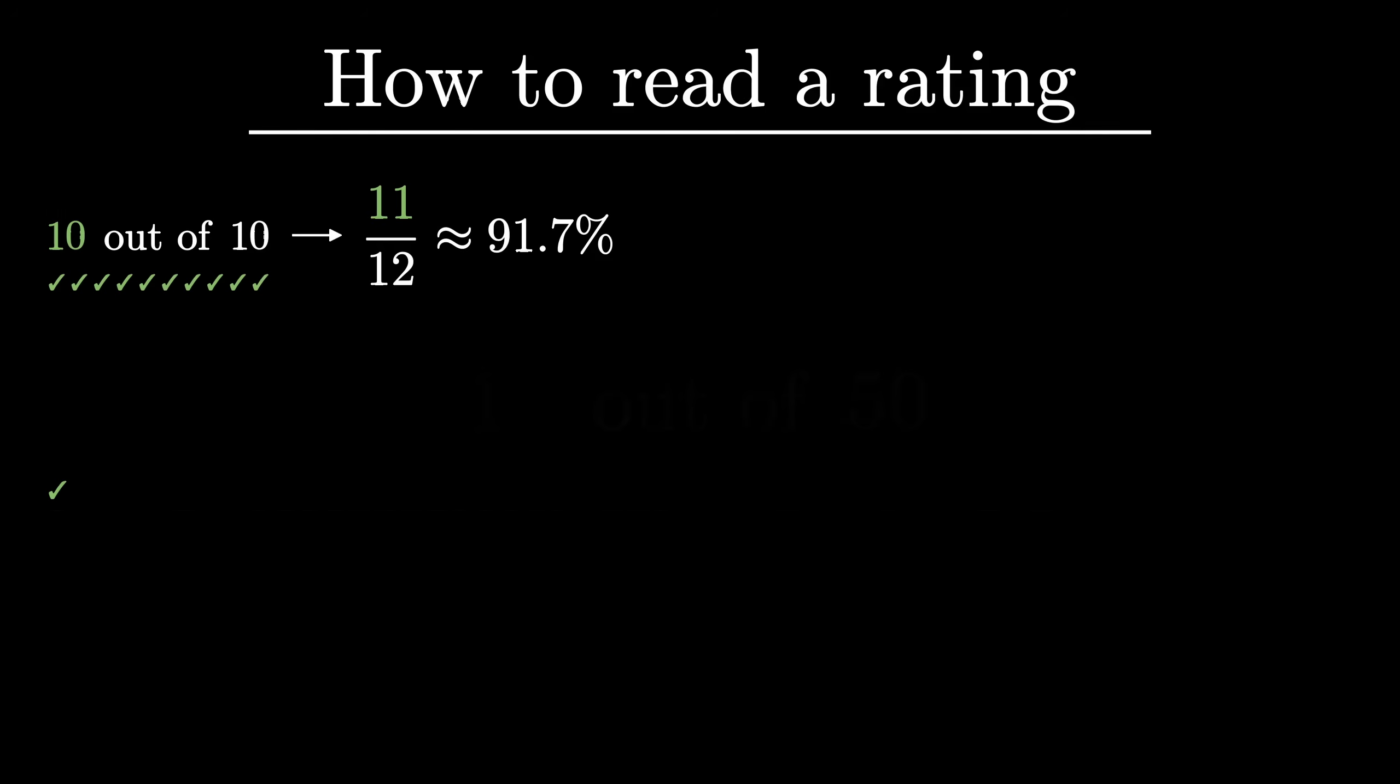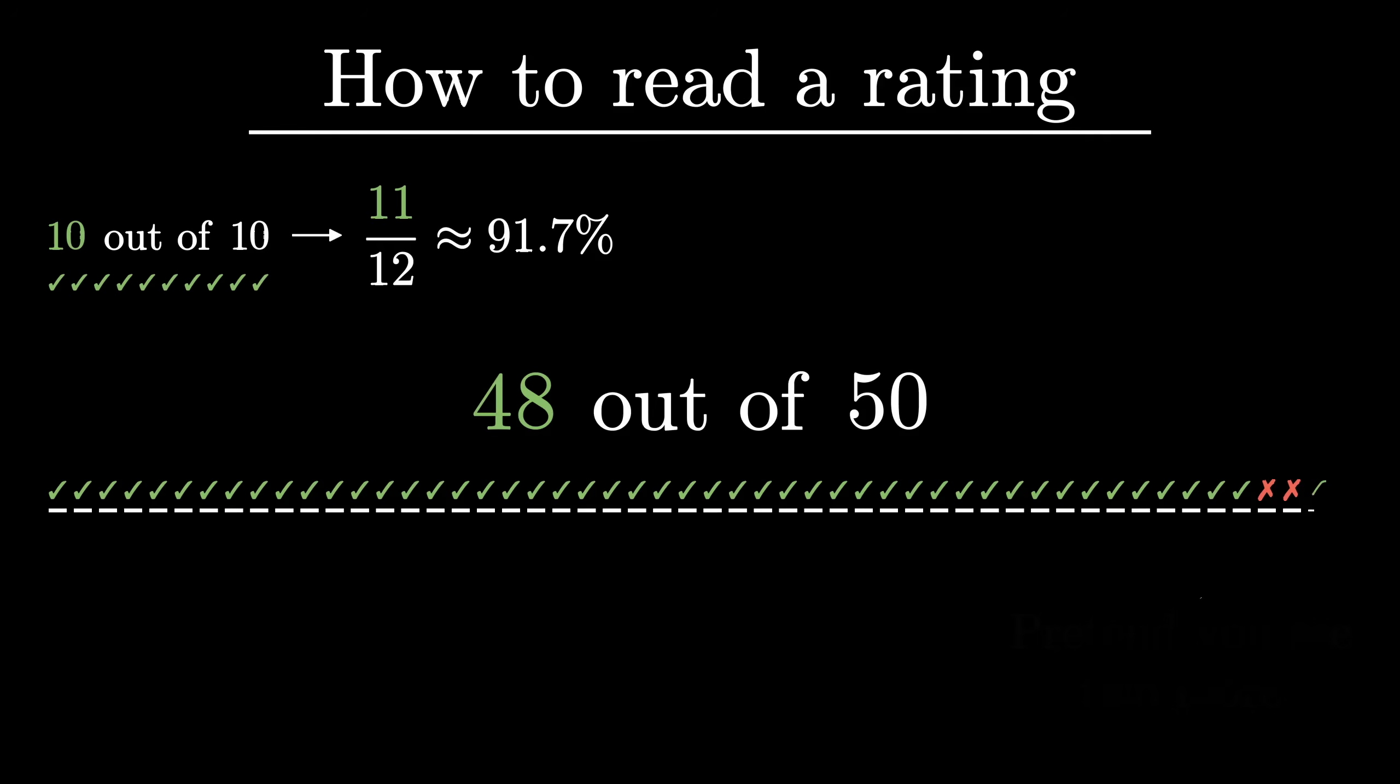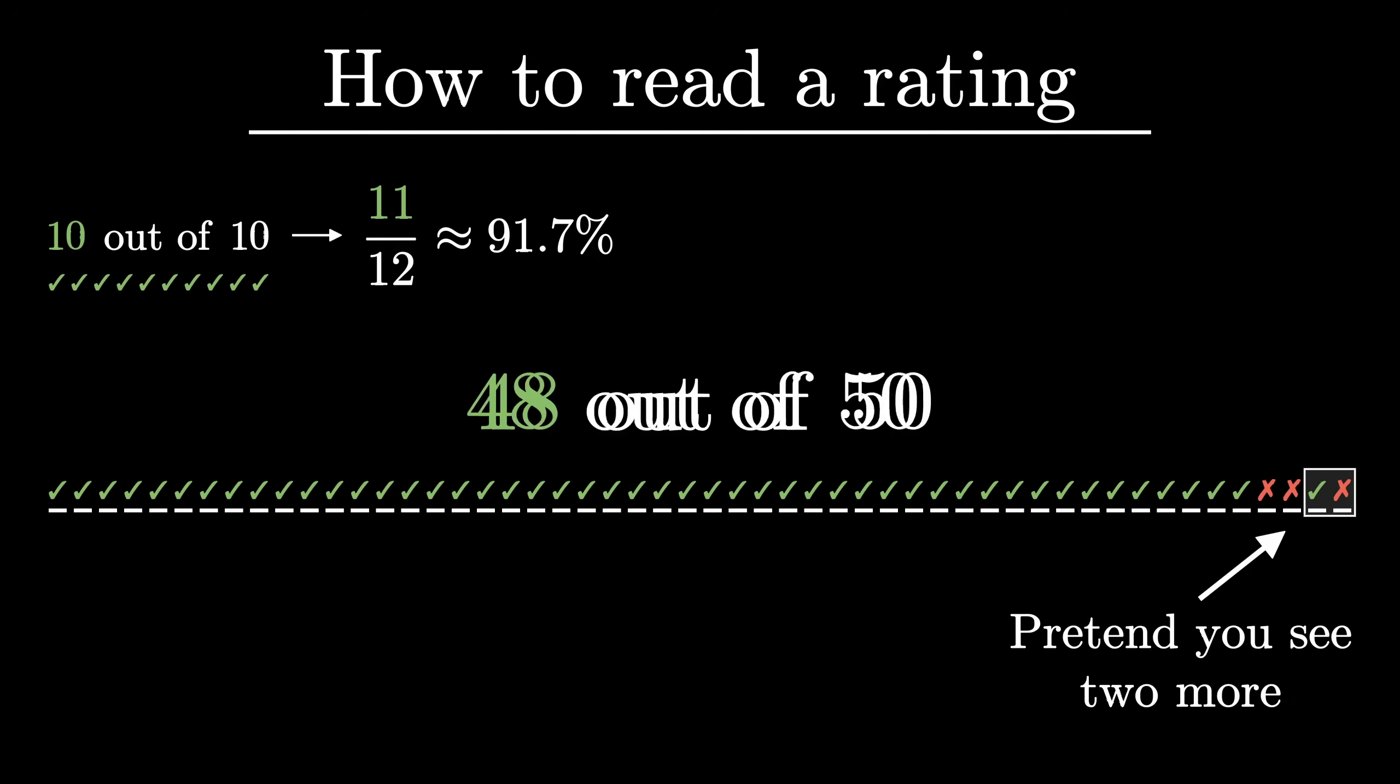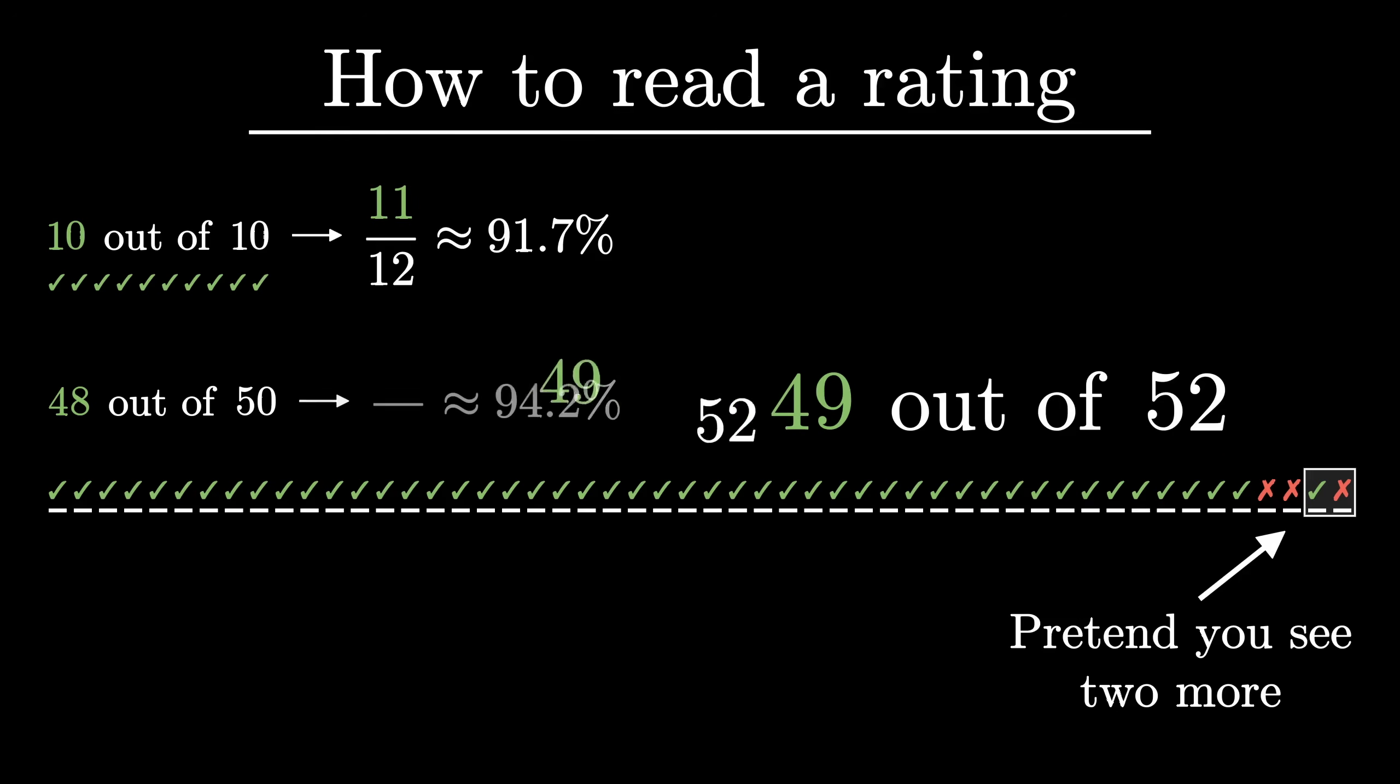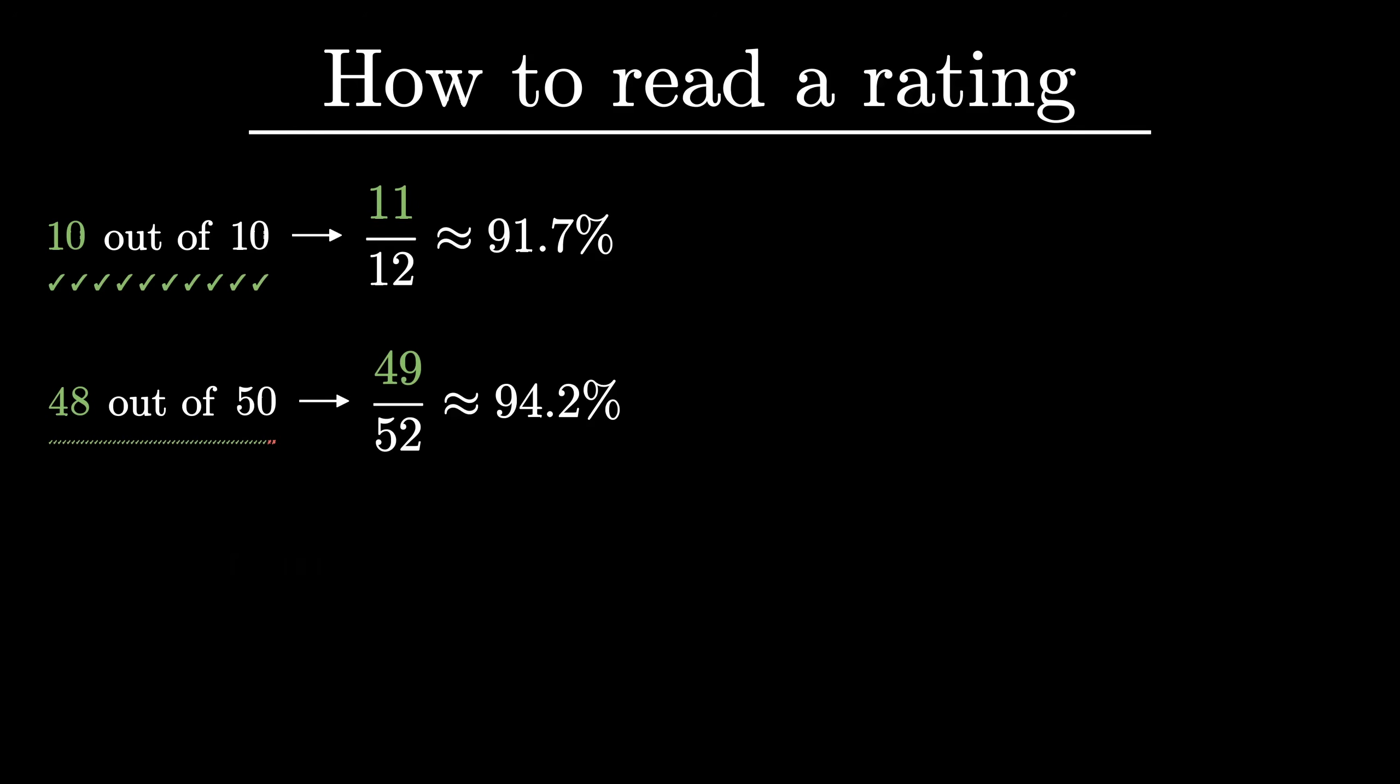So in the case of 50 reviews, where you have 48 positive and 2 negative, you pretend that it's really 49 positive and 3 negative, which would give you 49 out of 52, or 94.2%. That's your probability of having a good experience with the second seller.